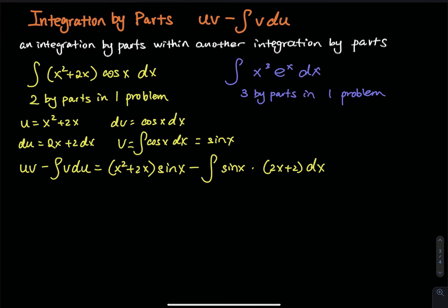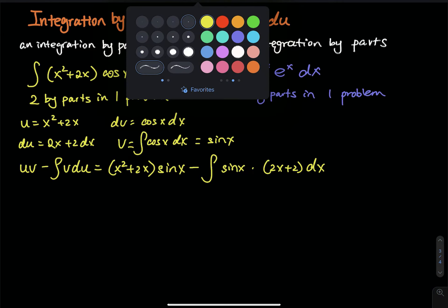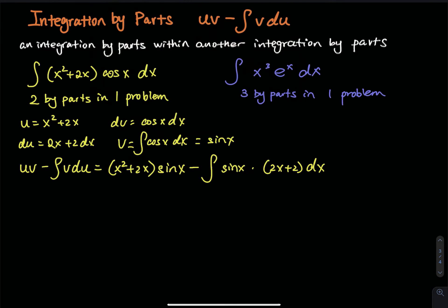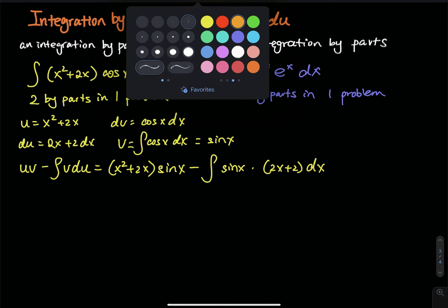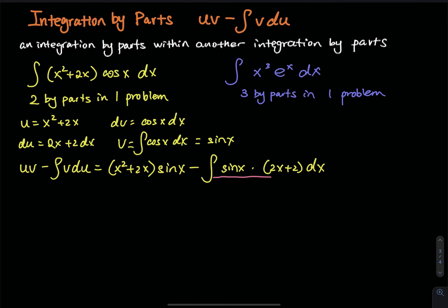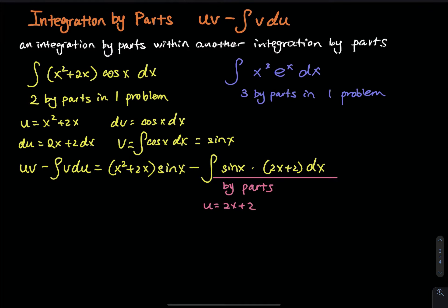As you can see, we have another integration by parts over here. We have another integration by parts. Let me use another color to give you better contrast. So here we have another integration by parts. For this integration by parts, I'm going to let u equals to 2x plus 2. How do I know that this is another by parts? Because you can integrate sine.